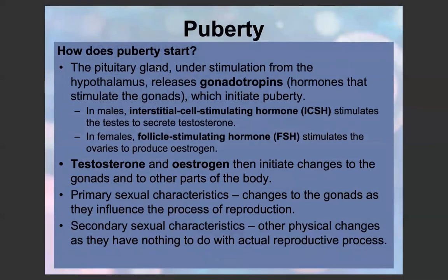Puberty starts when the pituitary gland, with stimulation from the hypothalamus, releases gonadotropins — hormones that stimulate the gonads, which are the organs that make sex cells, so the testes or the ovaries. The gonadotropins initiate the gonads to initiate puberty.